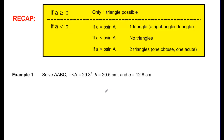Here's a nice little recap. If side A was greater than or equal to B, we only get one triangle possible. If A was less than B, there are three possibilities: it could be a right angle triangle where A equals B sine A; if A was less than B sine A, we get no triangles; but if A was greater than B sine A, we get two triangles — this being the ambiguous case.